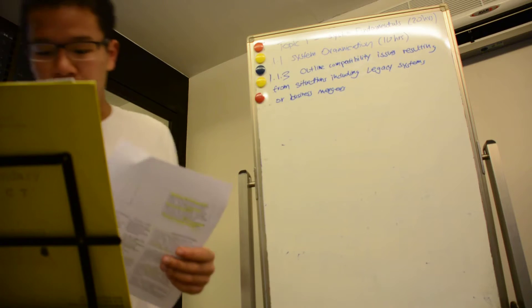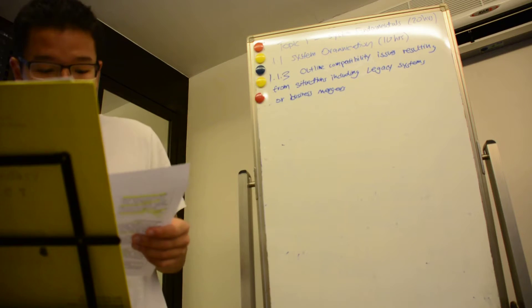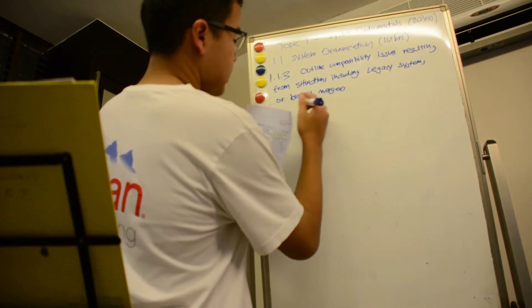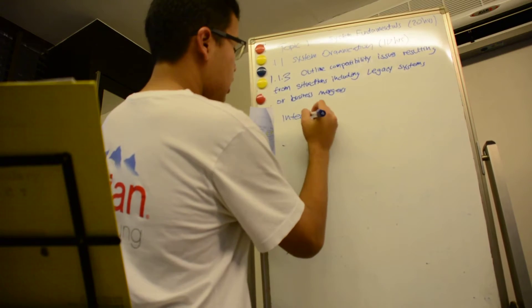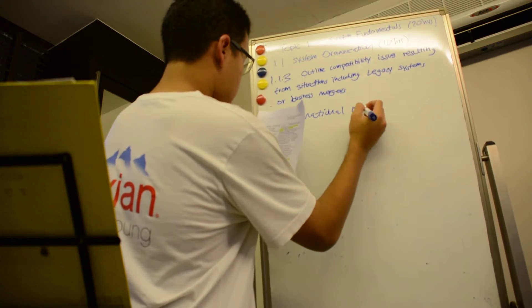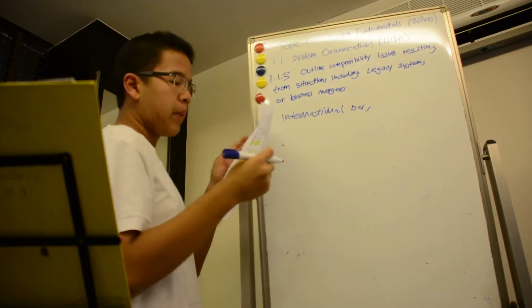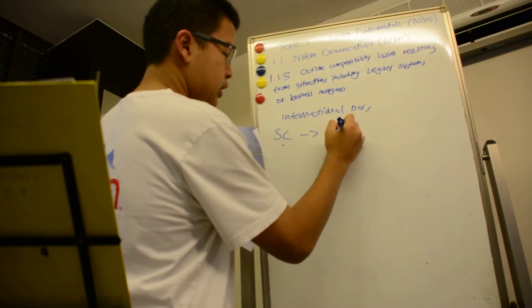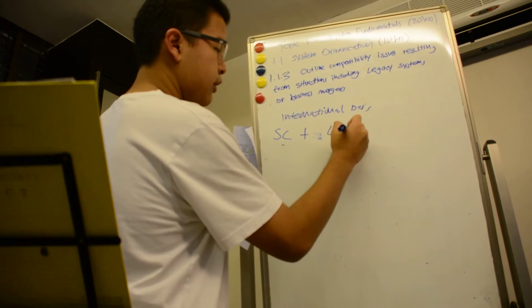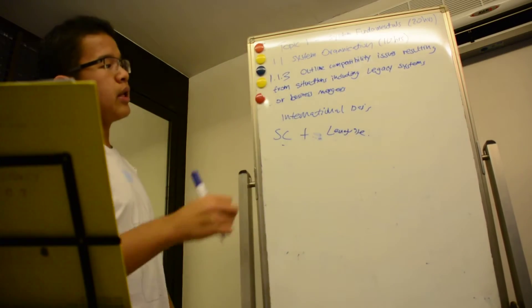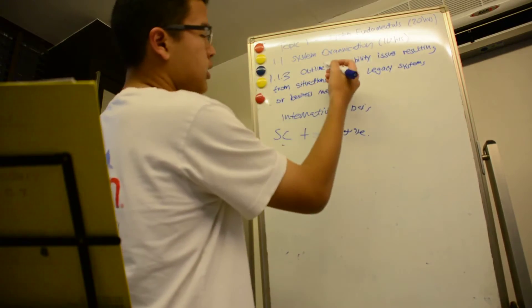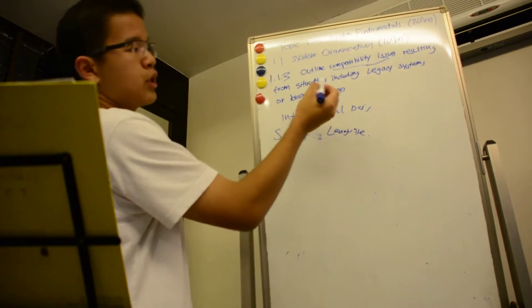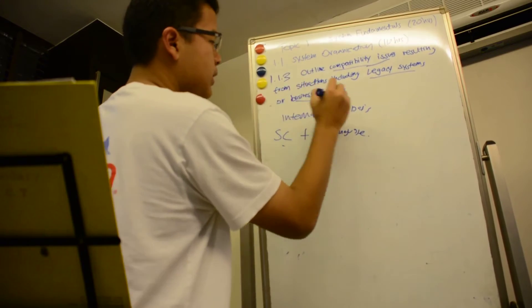So, the teacher's notes for this, let me read this out. When organizations interact, particularly on an international basis, there may be issues of software compatibility and language differences. So by reading this outline syllabus statement, outline compatibility issues, that's a keyword, resulting from situations including legacy systems or business mergers.